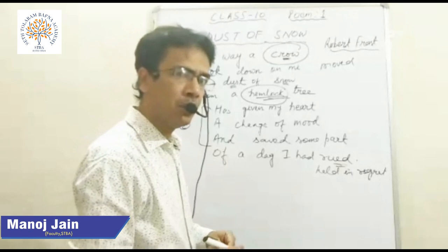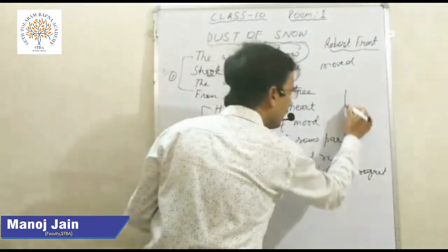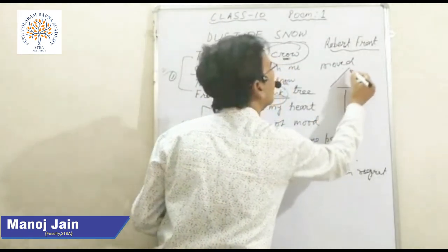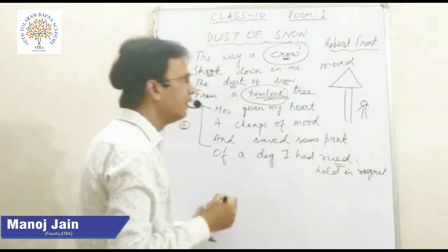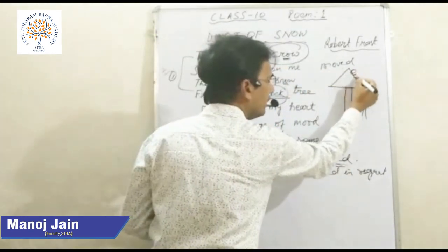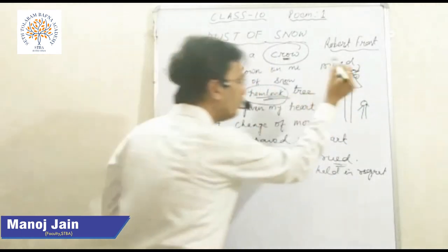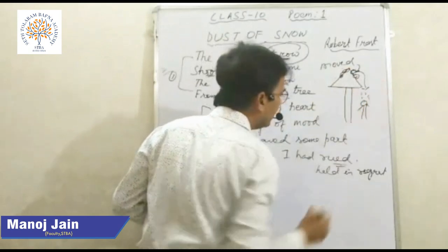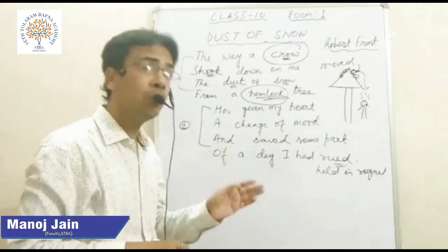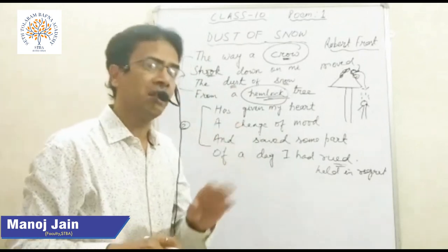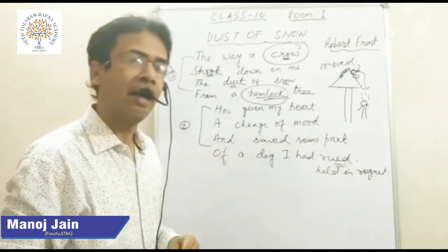I hope you have understood the poem. Let us revise the main points quickly. There was a hemlock tree; the poet was standing under the tree. This tree was covered with snow and a crow was sitting on it. Due to the movement of the crow, pieces of snow fell on the poet. As a result, the mood of the poet changed completely — his pensive mood was converted into a happy mood.